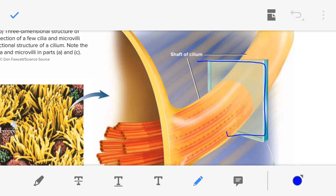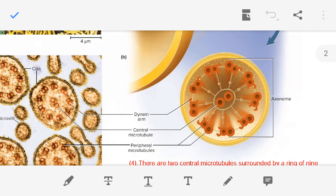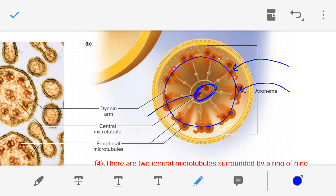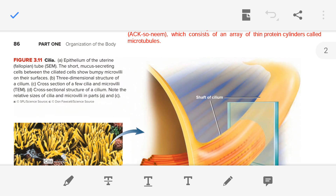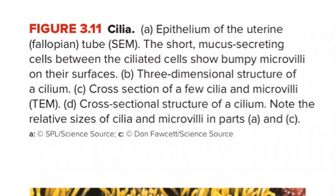This is the cross-section of the axoneme. In the cross-section you can see pairs of microtubules. In the peripheral region, if you count, you will find nine pairs of microtubules, and in the center there is one pair — the central pair of microtubules — surrounded by the nine peripheral pairs. This is the basic arrangement of the axoneme.